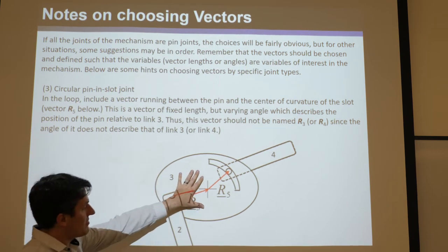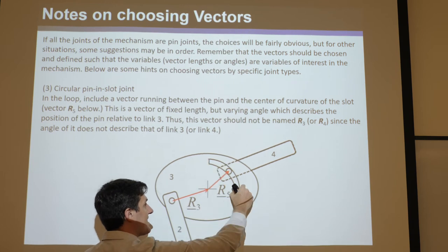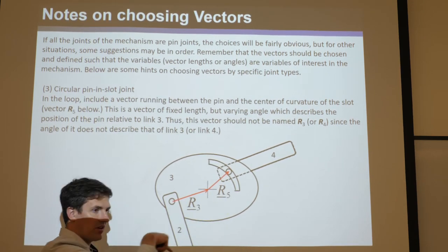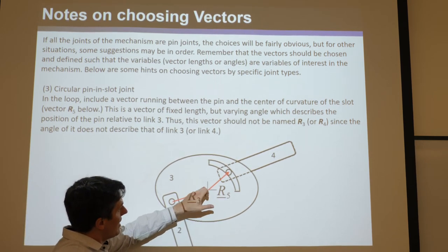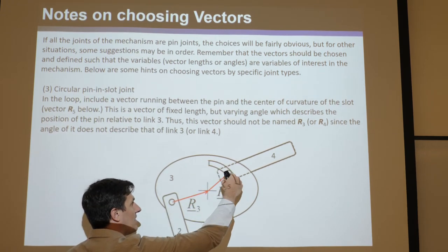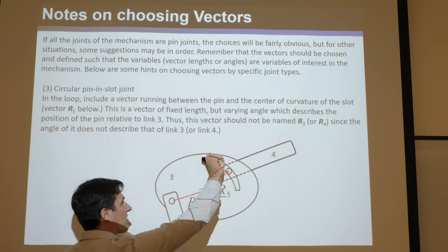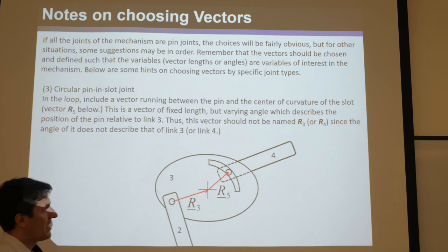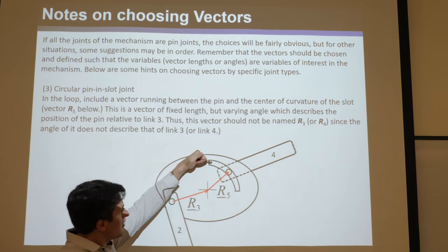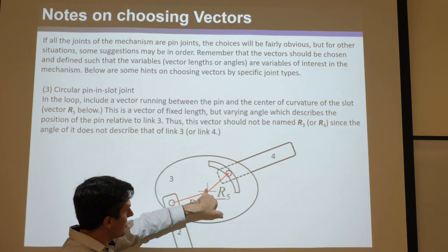Now say you have some arbitrary-shaped link — link 3 — and there's a circular slot cut in it, with a pin sliding in that circular slot. If that's the case, you want to know the center of that circle. They'll always give it to you in the form of a cross. When you see that cross, you have to ask yourself: what is that the center of? It's the center of the middle circle — the one that the pin follows. That cross is the center of the circular slot's central axis.